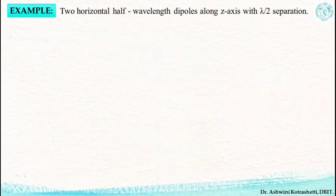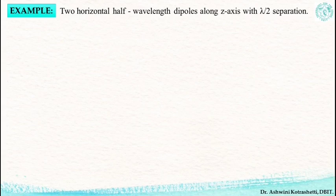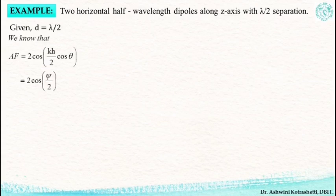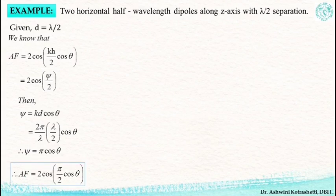Now let us take another example. Here we have two horizontal half-wavelength dipoles along the z-axis with lambda by 2 separation. All that has changed is that instead of vertically placed half-wavelength dipoles, we now have horizontal half-wavelength dipoles. Nothing else has changed — both are still along the z-axis with a distance of separation of lambda by 2. So, thinking logically, our array factor remains the same; it does not change. The array factor will still be 2 cos(pi/2 cos(theta)).